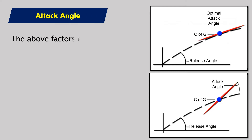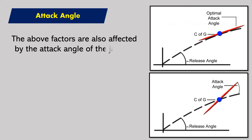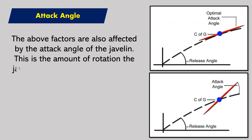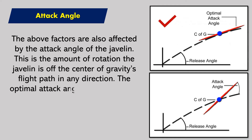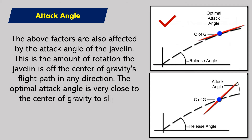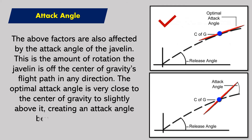The above factors are also affected by the attack angle of the javelin. This is the amount of rotation the javelin is off the center of gravity's flight path in any direction. The optimal attack angle is very close to the center of gravity to slightly above it, creating an attack angle between 0 to 5 degrees.